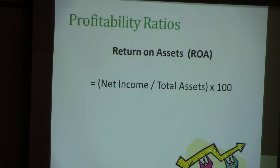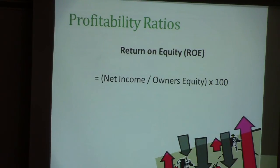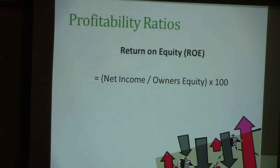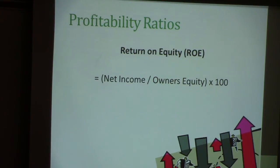Return on equity is net income divided by the equity of the business — the owner's equity or shareholder's equity — times 100, again giving a percentage. This tells you whether the management of the company is making good use of the money that the owners have put into the business. If they are not making good use of the money, then you may need to rethink your strategy as an investor. Again, 10–15% is a good baseline, but the higher any of these numbers are, the better. If profit margin, return on assets, and return on equity are at 50–60%, that is amazing, though you'll rarely find businesses that can consistently achieve that kind of profit margin.